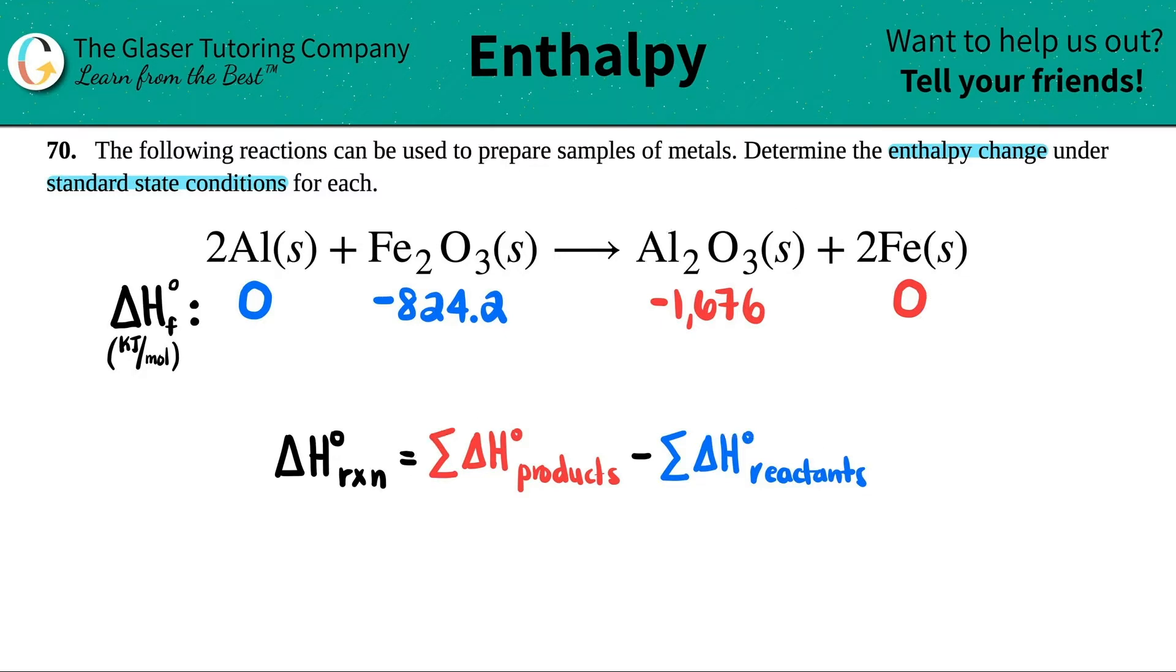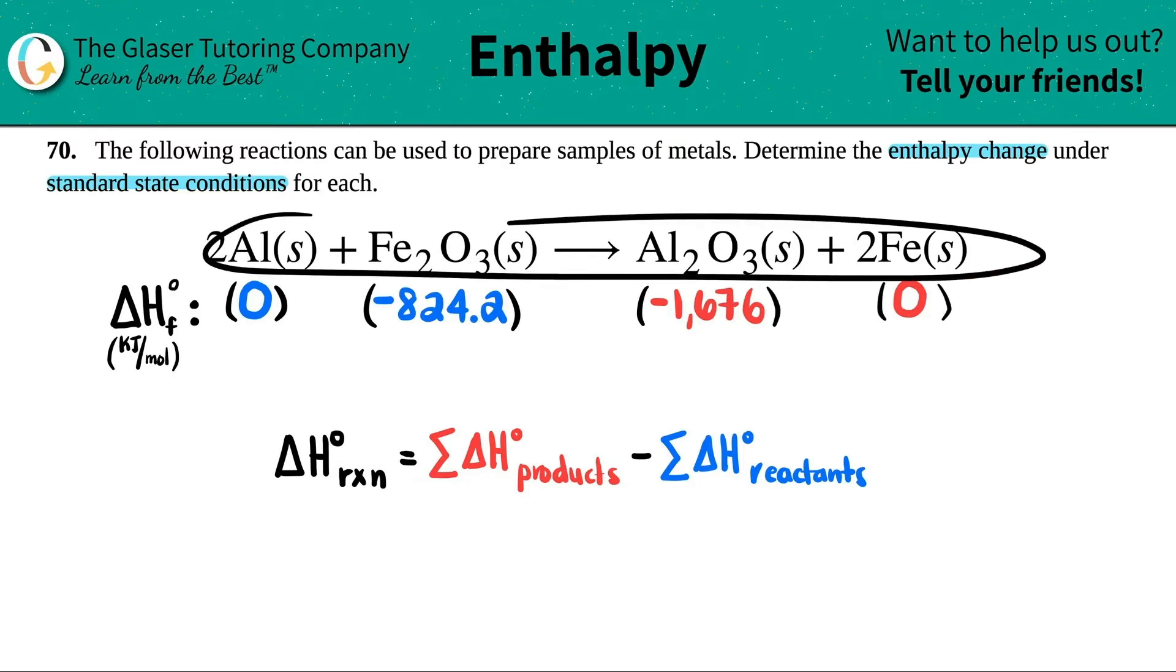Well, how do we do that? After we get the appendix values, the standard values, we're going to multiply these by how many we have in the formula. Now I already see that I have some coefficients in this equation. So that means that this is balanced. Always make sure that you have a balanced equation.